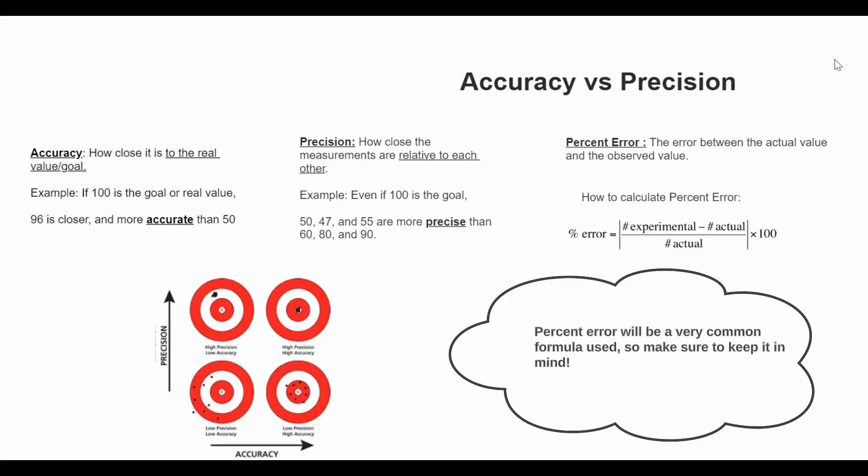Moving on to percent error, this is the error between the actual value and the observed value. To calculate this, you can find the experimental number, which is the observed value, minus the actual number, all over the actual number. You then find the absolute value of that and times it by 100, and you get the percent error.